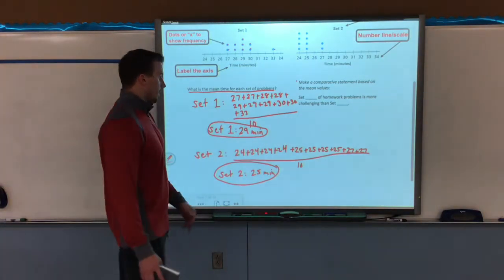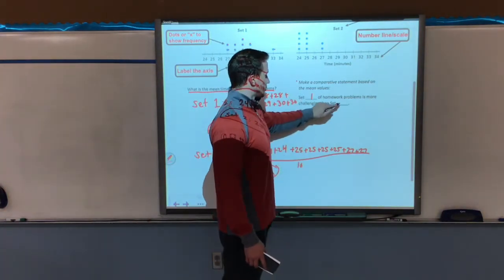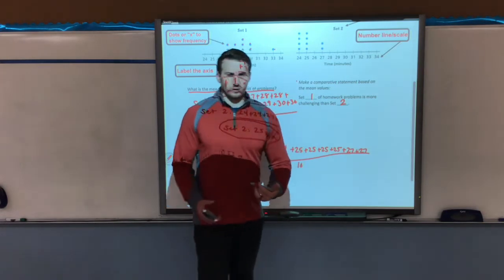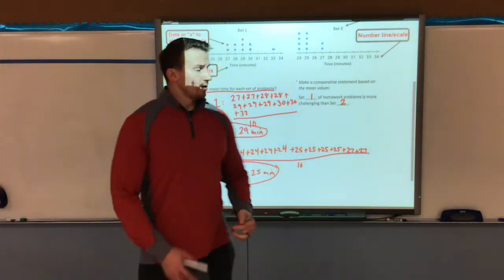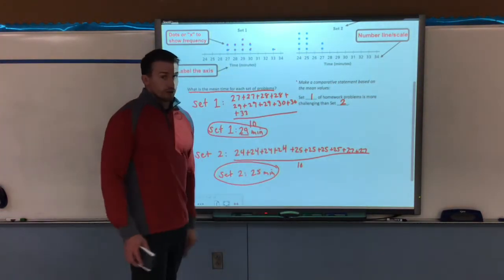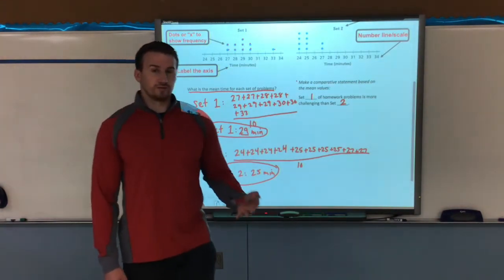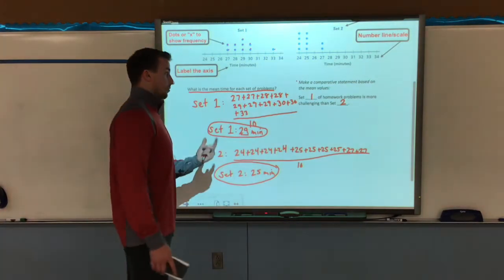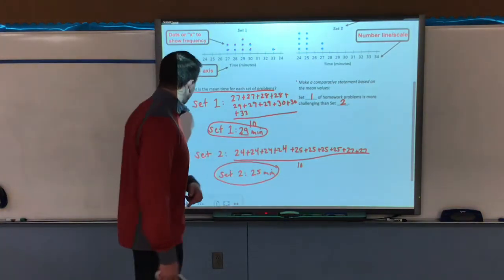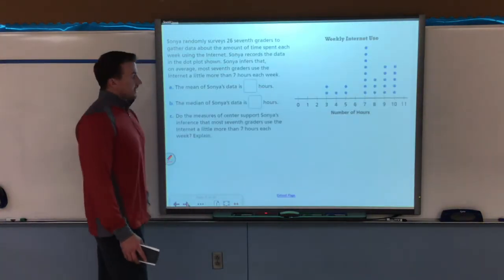So we know that set one of the homework problems is more challenging than set two. Well, how do we know that? Because for set one, on average, it took almost 30 minutes to do those problems, whereas set two, 25 minutes. It's almost a five minute difference between the set of problems. So we know that set one is probably more challenging. Alright. Next example.